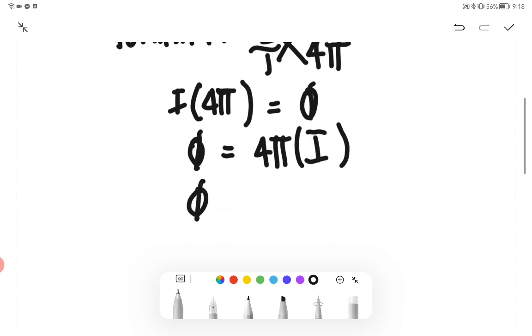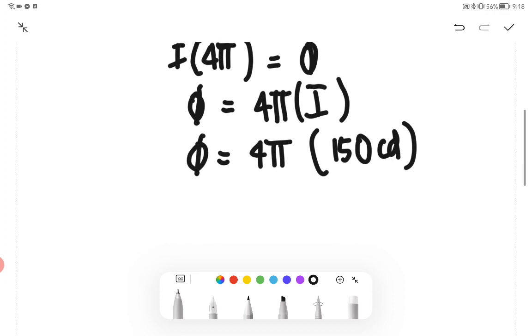Therefore, φ equals 4π multiplied by 150 candela, which is equivalent to 1885 lumens.